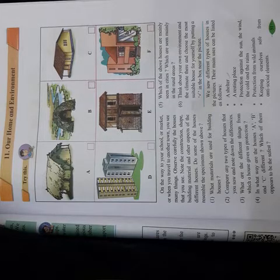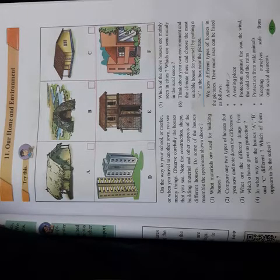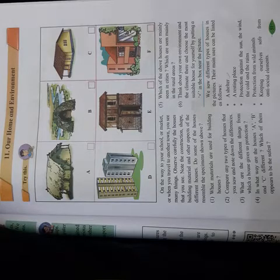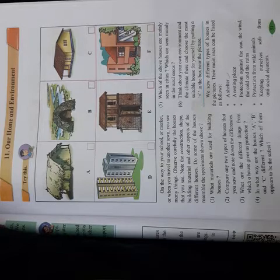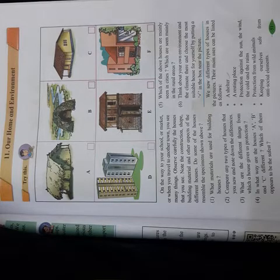The fifth question is: which of the above houses are mainly seen in cities? Mostly we see houses like C, D, and F in cities. What types of houses are seen mainly in rural areas, in villages? Houses like A and E type are mostly seen in villages.